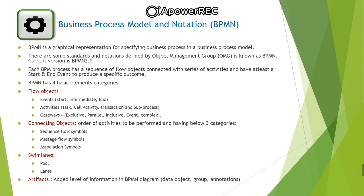The last element of BPMN is artifacts, which provides an added level of information in a BPMN diagram, allowing developers to bring more information into the diagram, making the model more readable. There are three predefined artifacts: data objects, which show the reader which data is required to produce an activity; group, represented with a round corner rectangle and dashed lines, used to group different activities without affecting the flow; and annotation, used to give the reader an understandable impression of the model.